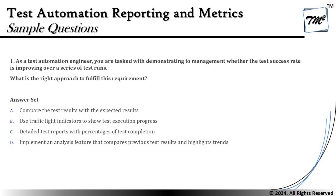Option B says: use traffic light indicators to show test execution progress. Traffic lights are only for showing a summary of test case execution progress and completion within one test run cycle, not across a series of cycles. These color indicators reflect what is critical, amber, or green to bring attention, but they don't address multiple runs.